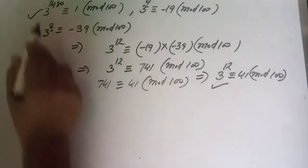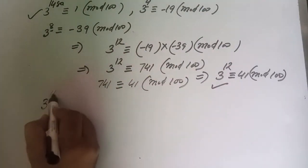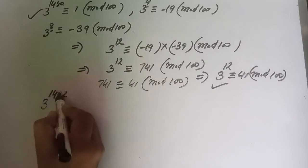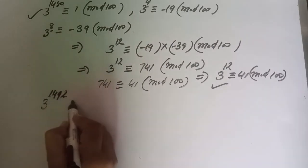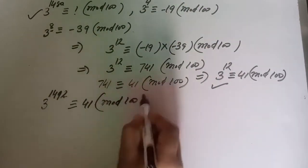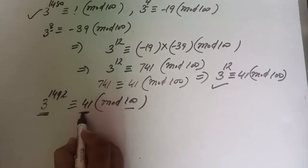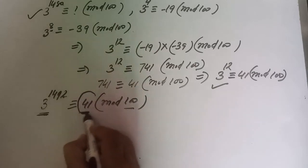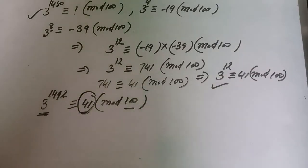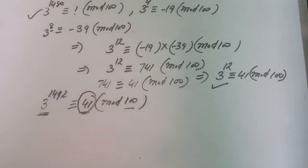Finally, 3^1492 = 3^1480 × 3^12 ≡ 1 × 41 = 41 mod 100. So the remainder when dividing by 100 is 41, meaning the last two digits of 3^1492 are 41. This is a beautiful application of the Euler phi function and Euler's theorem.